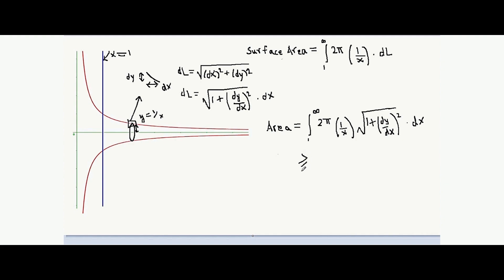So the surface area is equal to integration from 1 to infinity 2π into 1 over x dl and dl we found out to be under root of 1 plus dy by dx square into dx and we observe that the value of this integral will be greater than or equal to the integration from 1 to infinity 2π into 1 by x into dx because the square root term will always be greater than or equal to 1. So we get the value of the surface area to be greater than or equal to 2π into ln x from 1 to infinity which of course is infinite. So we get our surface area to be infinite.